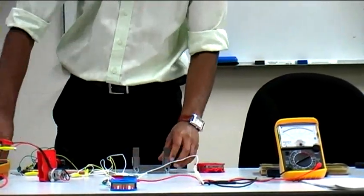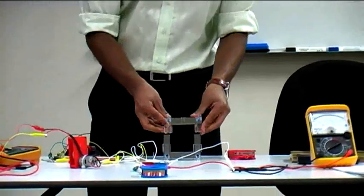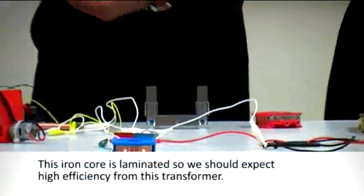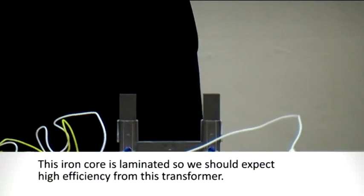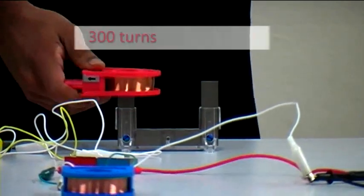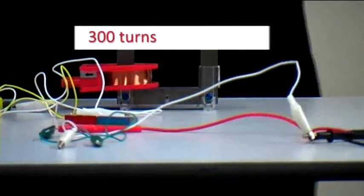The structure of a transformer has a soft iron core. Let's use 300 turns as my primary coil, 600 turns as my secondary coil.